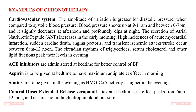Examples of chronotherapy in the cardiovascular system: the amplitude of variation is greater for diastolic pressure compared to systolic blood pressure. Blood pressure shoots up at 9–11 am and between 6–7 pm, slightly decreases in the afternoon, and profoundly dips at night. Secretion of atrial natriuretic peptide increases in the early morning. Higher incidences of acute myocardial infarction, sudden cardiac death, angina, transient ischemic attack, and stroke occur between 6 am and 12 noon. Circadian rhythm of triglycerides, serum cholesterol, and other lipid fractions peak in the evening.